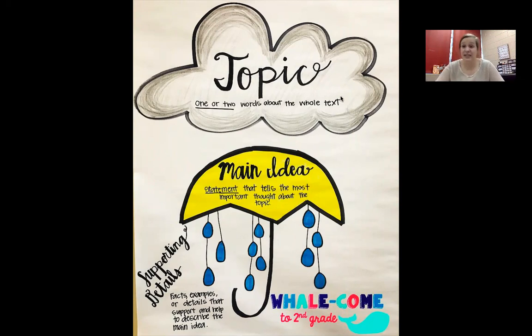Your topic is going to give you the least information. It's just going to be one or two words about what our story is about. Then your main idea is going to be one sentence about what the whole text is mostly about or what the most important part of the topic is.